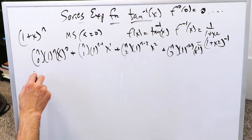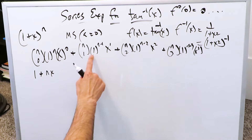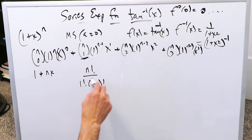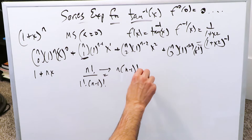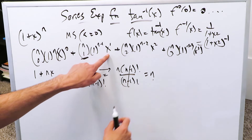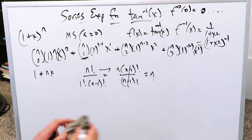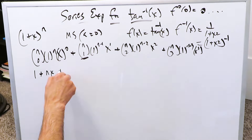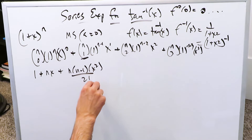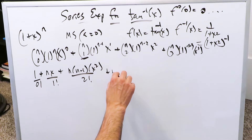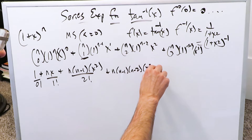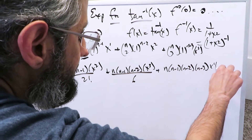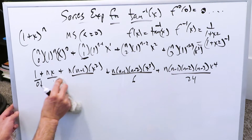When you simplify all of this, you get basically just a 1. When you simplify the next term, you get nx. I will show you just one simplification and the rest will be assumed. These combinatorial coefficients are equal to n factorial over 1 factorial times n minus 1 factorial. That simplifies to n times n minus 1 factorial divided by n minus 1 factorial, giving you just n — so you get nx. From that, you get n times n minus 1 times x squared over 2 factorial, then n times n minus 1 times n minus 2 times x cubed over 3 factorial, and n times n minus 1 times n minus 2 times n minus 3 times x to the 4 over 4 factorial.